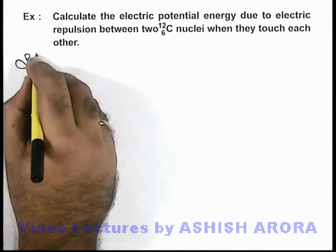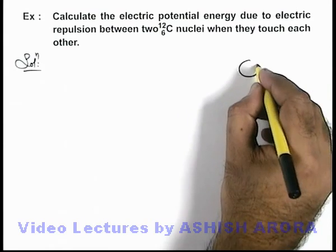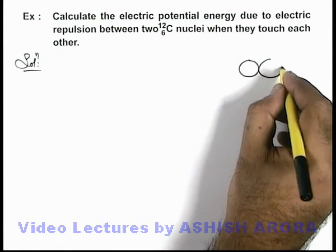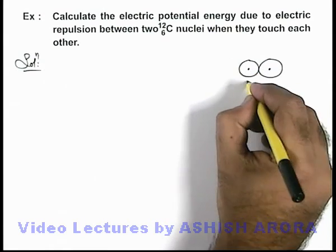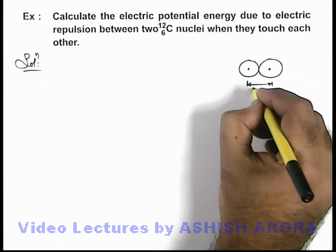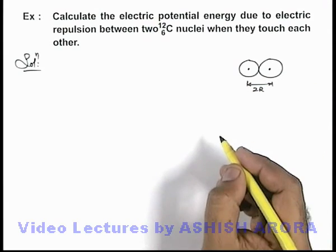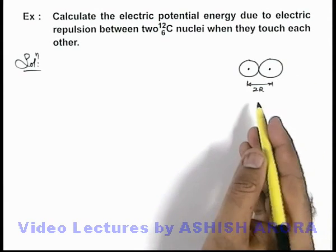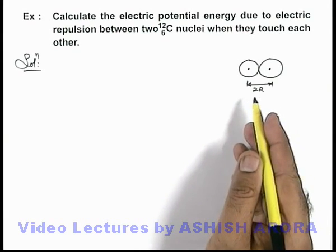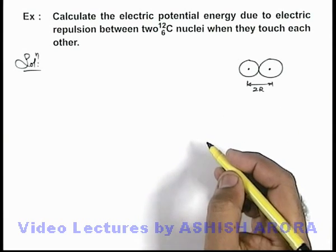In this situation when two carbon nuclei touch each other, we can see the separation between the nuclei will be equal to twice the radius of each nucleus. Nuclear radii we can easily calculate by using the formula of Fermi radius.